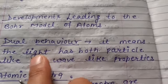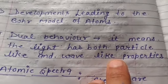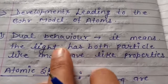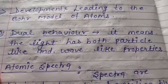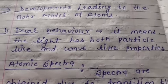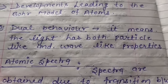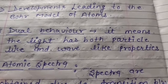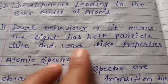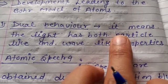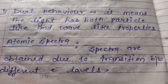Light behaves both as a particle and as a wave, so we can say it has dual behavior — dual nature. De Broglie was the scientist who proved the dual nature of light — under which conditions it behaves as a wave and under which conditions it behaves as a particle. The other concept he explained was atomic spectra.